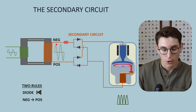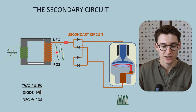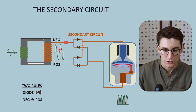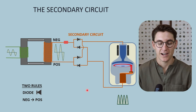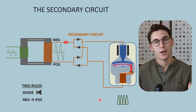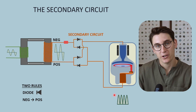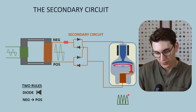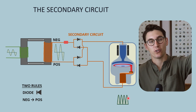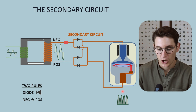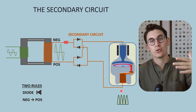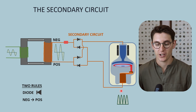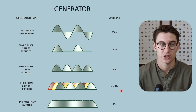We've ensured our positive deflections stay positive and we've converted our negative deflections into positive deflections. However, this rectified current is still fluctuating — it has periods of peak voltage as well as periods with no voltage. We want to create a smooth, constant tube potential between our cathode and our anode, and that's where the process of generation comes in.